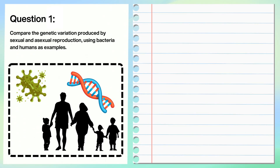Let's put this knowledge into practice and look at a question. Compare the genetic variation produced by sexual and asexual reproduction, using bacteria and humans as examples. Pause here to have a go.